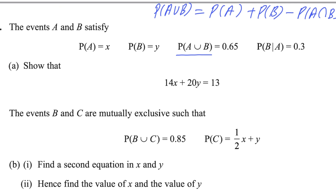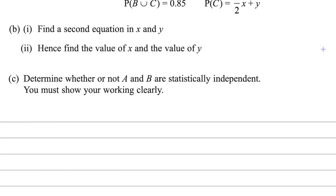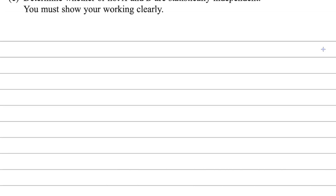We have all the values given in the question: probability of A, B, and A union B are given. But probability of A intersection B is not given — we could find it from the conditional probability value given.